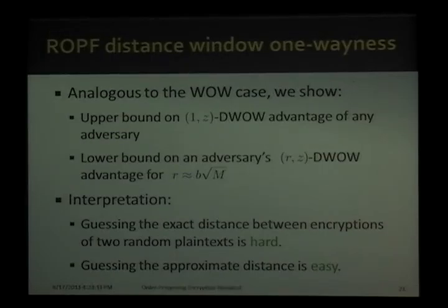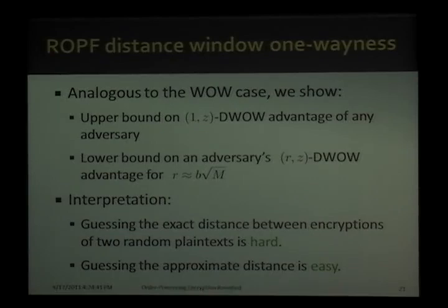Regarding distance window one-wayness, we find analogous results to the window one-wayness cases. The interpretations are that guessing the exact distance between encryptions of two random plaintexts is hard, while guessing the approximate distance is easy.